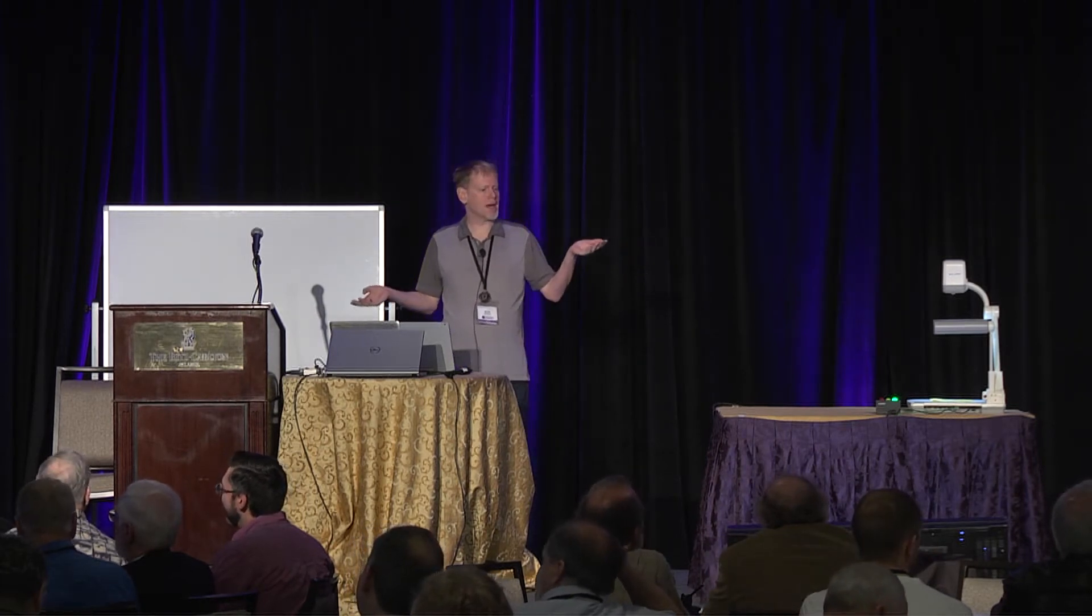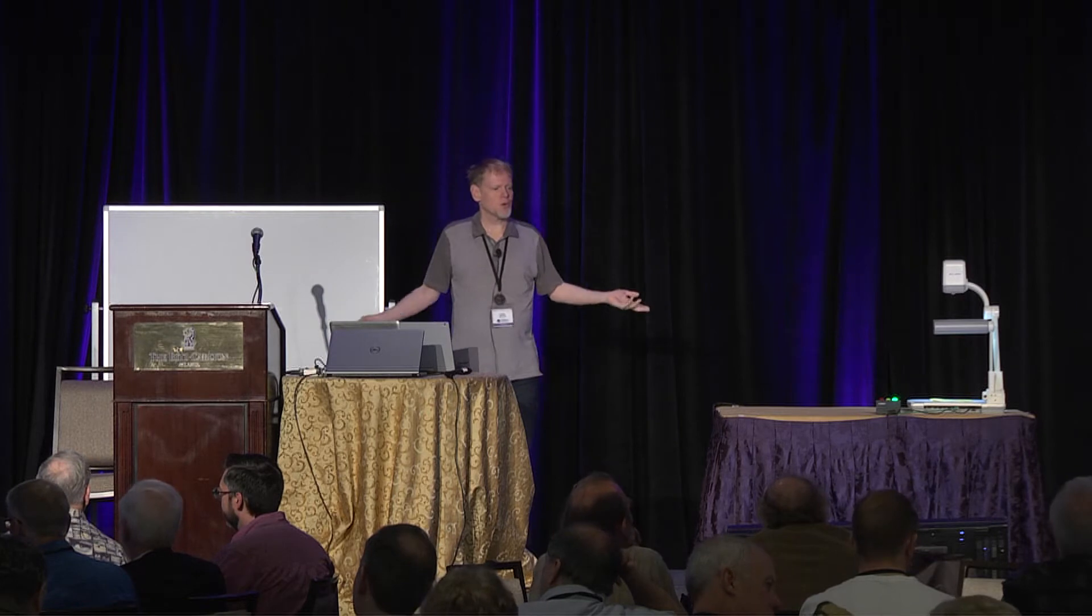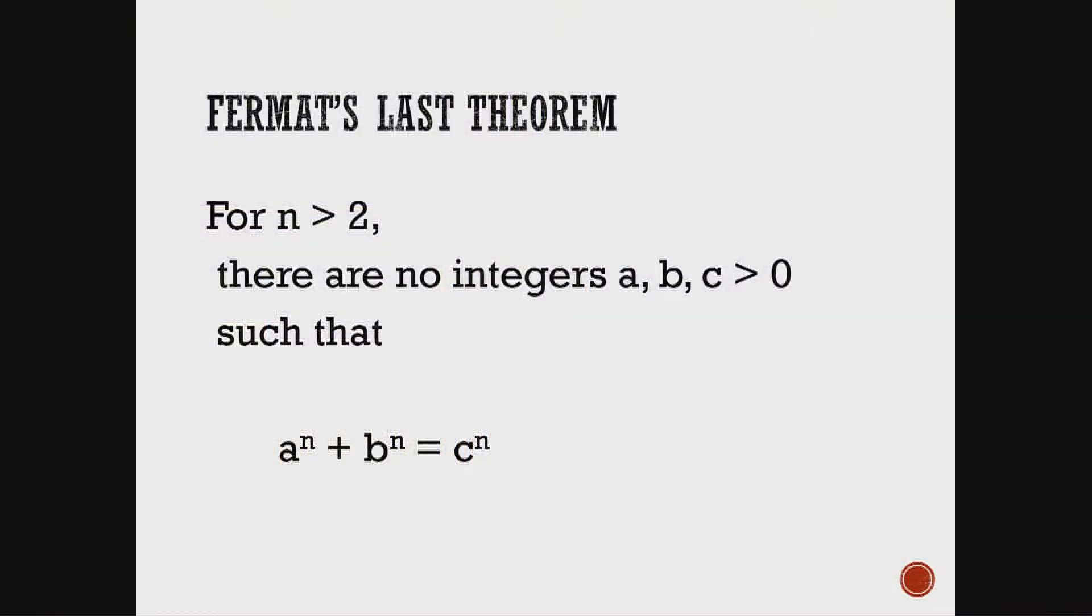So, just as a quick reminder, Fermat's Last Theorem is a to the n plus b to the n equals c to the n has no solutions for positive integers a, b, and c, and n greater than 2.